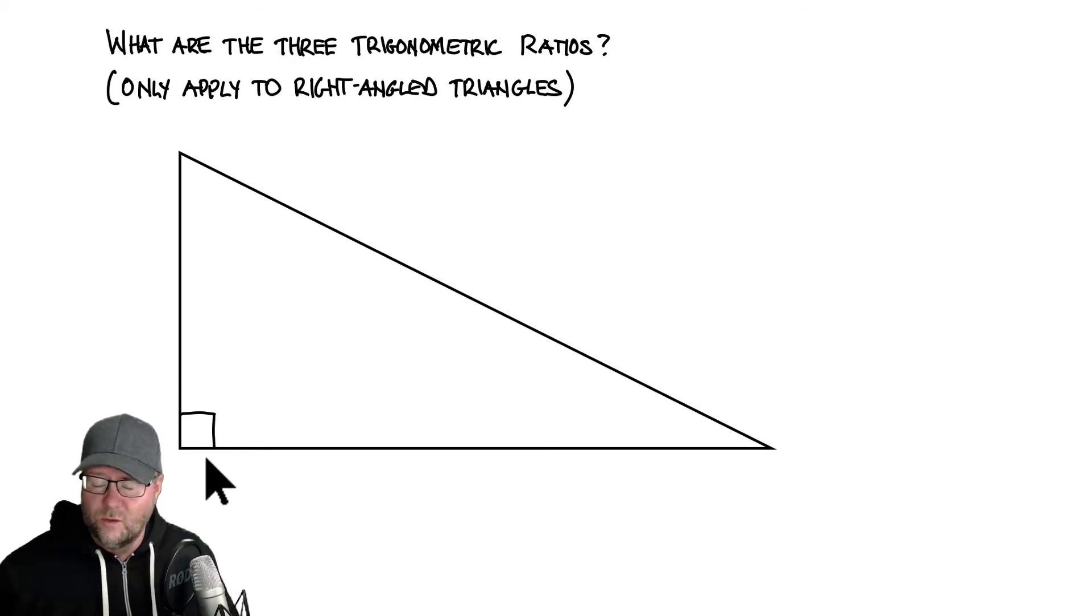So only for right angled triangles. Now there are more than these three, but these are the three main ones or the three that we're going to look at in our introduction to trigonometry. So let's just do a quick tour of my right angle triangle. I know that the side that's opposite the right angle is always the hypotenuse and it's the longest side. So I'm going to label that H.